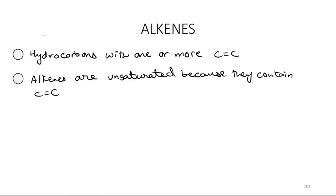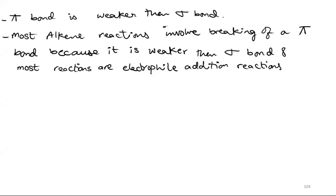Now let's talk about Alkenes. Alkenes have some properties. They are hydrocarbons, and Alkenes are unsaturated because they contain a carbon-to-carbon double bond. One more thing is that the pi bond is weaker than the sigma bond, and most Alkene reactions involve breaking of the pi bond. Most reactions are electrophilic addition reactions.